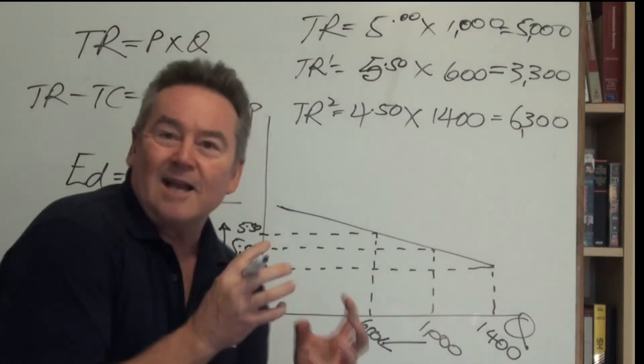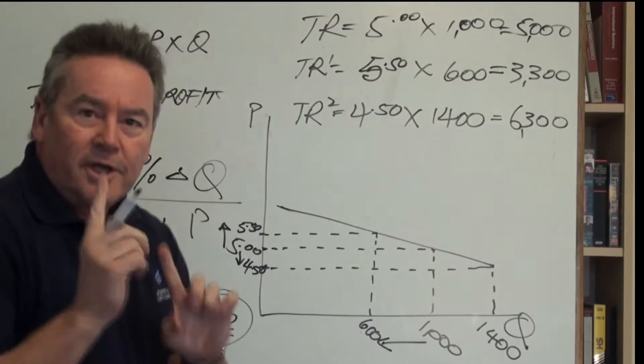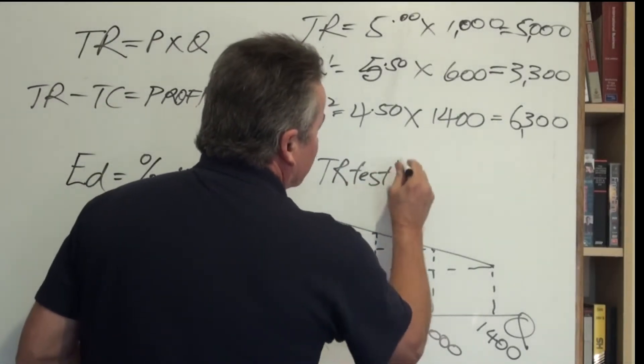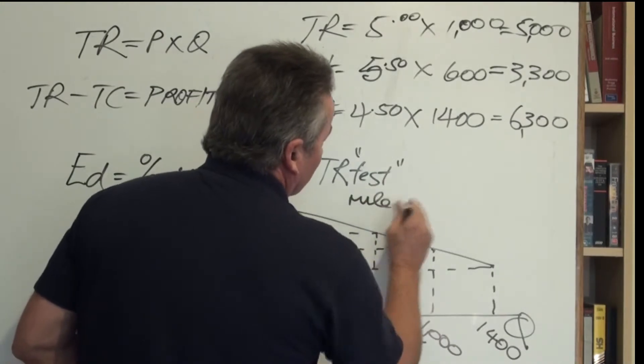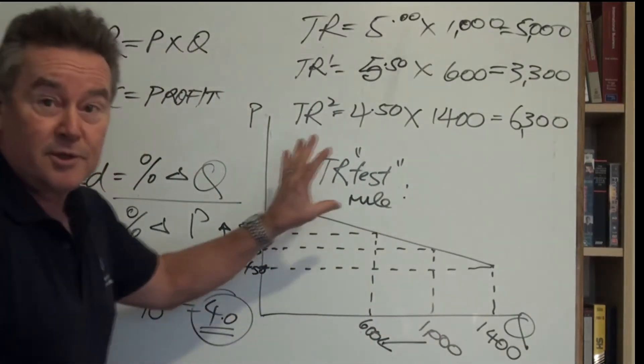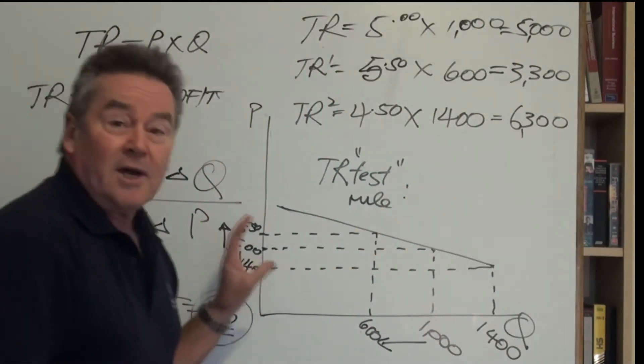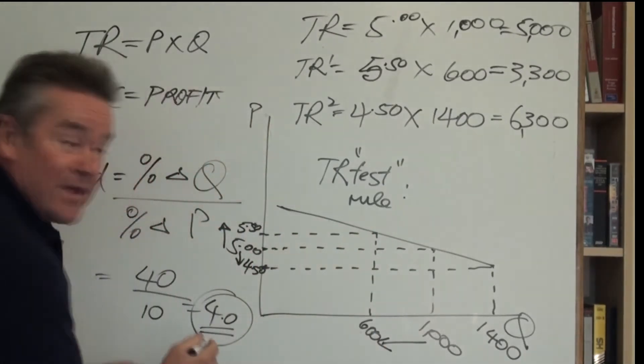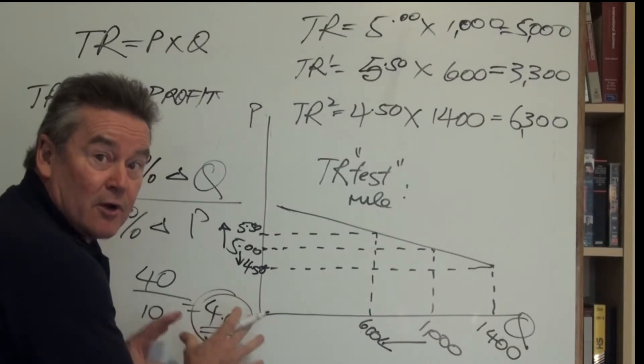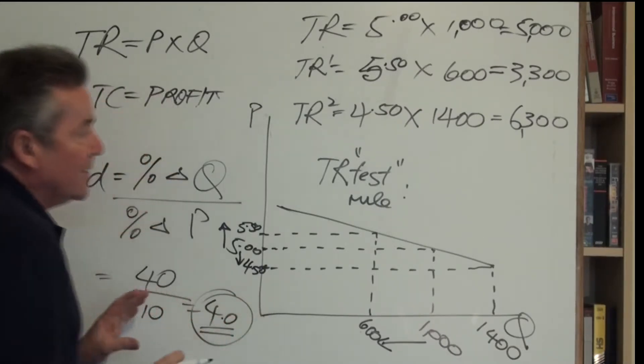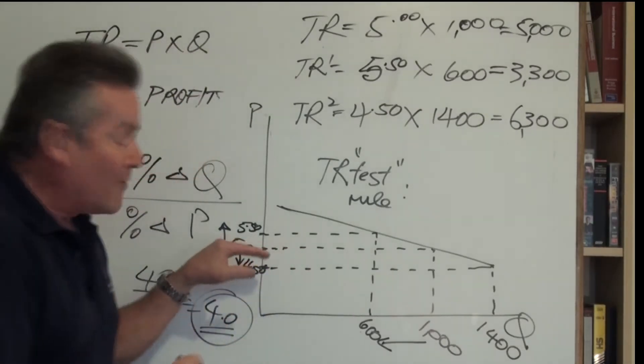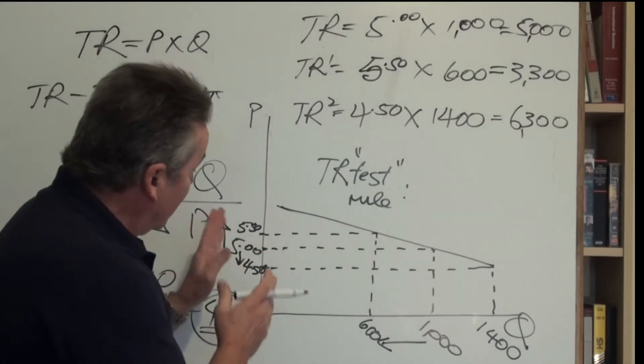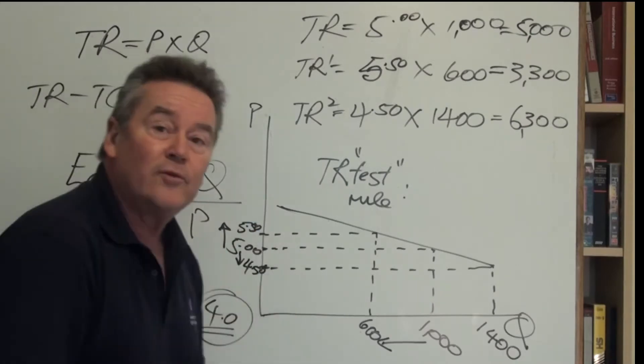So where's our little gem of knowledge? Well, here it is. The little gem is in what we call the TR test or the TR rule. And the rule says, in this particular case, if the price elasticity of demand is price elastic, and therefore it would throw up an elasticity coefficient of greater than 1, then for a price fall, total revenue will rise. But for a price rise, total revenue will fall.